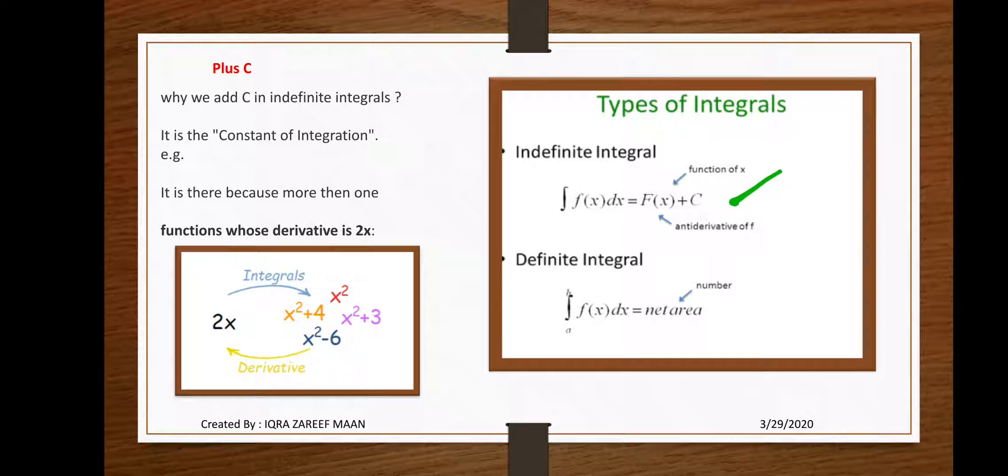We add C in indefinite integral. This is a very important question: it is the constant of integration. It is there because more than one function has a derivative of 2x. As we are familiar with derivatives: the derivative of x² is 2x, the derivative of x² + 3 is also 2x, as the derivative of a constant value is zero. Similarly, the derivative of x² + 4 is also 2x, and the derivative of x² + 6 is also 2x.